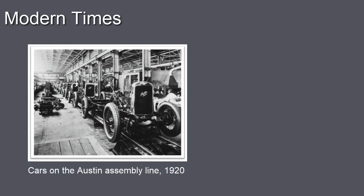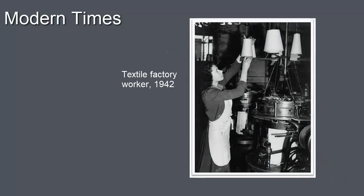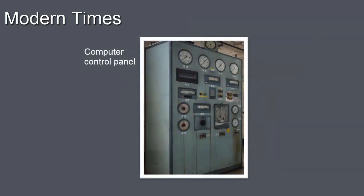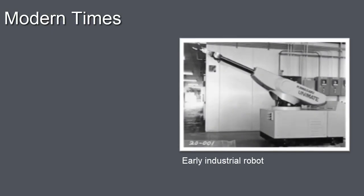Other automotive manufacturers soon began to copy Ford's techniques, and these techniques were put into use to meet the massive demand for military hardware during World War II. By the 1950s and 1960s, simple computers were used to control parts of processes. As computers became more sophisticated and smaller, computer-controlled machines, like robots, were developed.